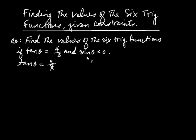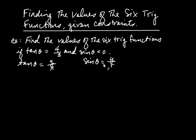Let's think about the second condition: sine of theta is less than zero. Sine of the angle is defined as the y coordinate divided by r. They tell us that sine is less than zero, but r is the radius and that's always positive. So the only way this fraction is going to be negative is if y is less than zero.